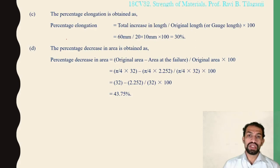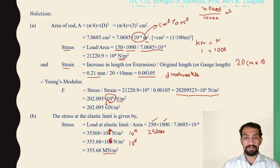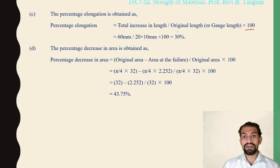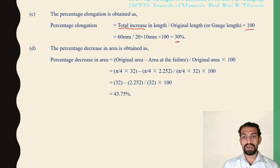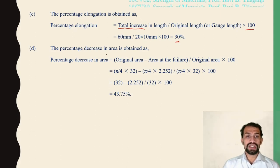Percentage elongation = (total increase in length / original length) × 100. The total extension was 60 mm and the original gauge length is 20 cm = 200 mm. So percentage elongation = (60 / 200) × 100 = 30%.